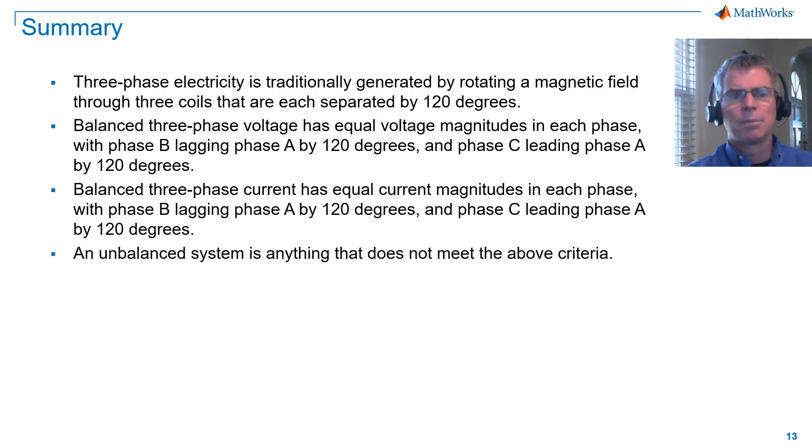An unbalanced system is anything that does not meet the above criteria. A balanced three-phase system delivers constant instantaneous power.